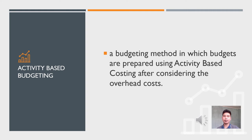Activity-based budgeting is a budgeting method in which budgets are prepared using activity-based costing after considering overhead costs. It is a management accounting tool which does not consider the past year's budget to arrive at the current year's budget. Instead, the activities that incur the cost are deeply recorded, analyzed, and researched. Based on the outcome of the study, the resources are allocated to an activity. Using activity-based budgeting can help companies reduce costs and squeeze more profit from sales.